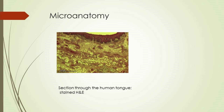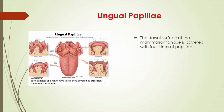The ventral surface is stratified squamous non-keratinized epithelium, which is smooth. The dorsal surface of the mammalian tongue is covered with four kinds of papillae: foliate, circumvallate, fungiform, and filiform. With the exception of the filiform papillae, these types contain taste buds and are known as gustatory papillae.